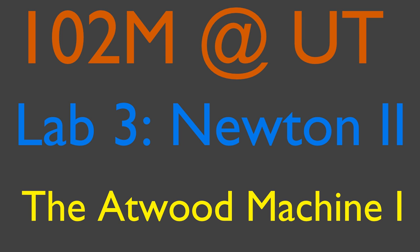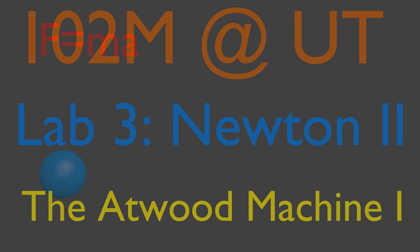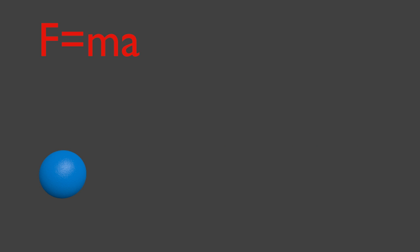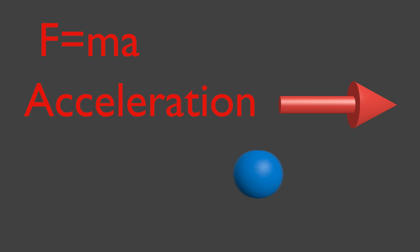This lab will cover Newton's laws of motion, as well as introduce the Atwood machine. A net force on a system causes an acceleration. Here is an example of a constant acceleration. We won't have to worry about components this time, since we will only deal with one dimension, but we'll need signs to account for direction.